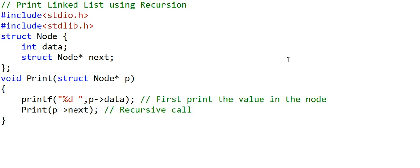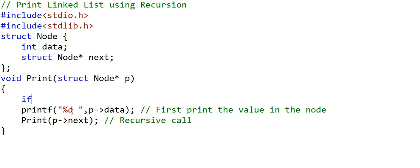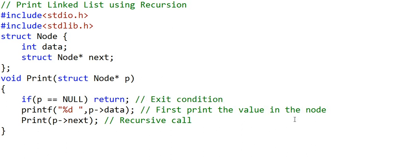There is one more important thing in recursion we should never forget: the exit condition. We should not go on making recursive calls infinitely. As we traverse from node to node, finally p will be equal to null. At that stage we avoid making a recursive call, we exit the recursion. So once we reach the end of the list with p equal to null, we exit the recursion at that stage.